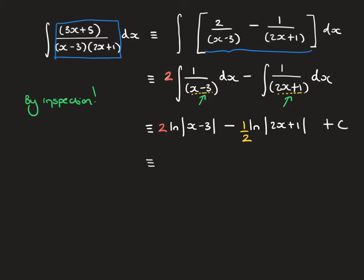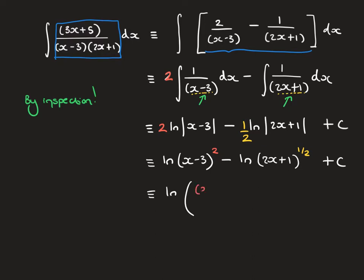Sometimes we're asked to tidy up or express our answer in particular ways, so I can use my laws of logarithms. I can rewrite the first term as ln of x minus 3 all squared — and because it's being squared it will be positive, so we don't require the modulus function. The second term becomes ln of 2x plus 1 to the power of a half, taking the positive square root. Ultimately this gives ln of x minus 3 squared over the square root of 2x plus 1, plus a constant.